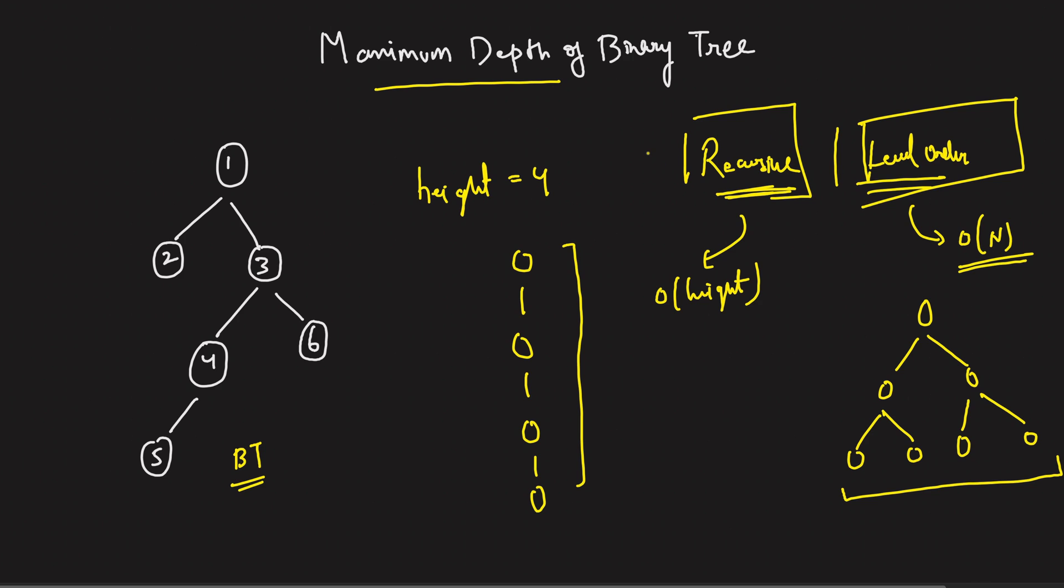Generally, people tend to use the recursive traversal because generally in binary trees, trees are not skew. Rather, trees end up having a very small height of log N in almost all the cases. That is the reason we use recursive. But again, you can use any of them. As I said, both of them have their own worst cases.